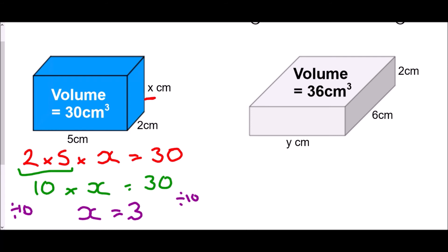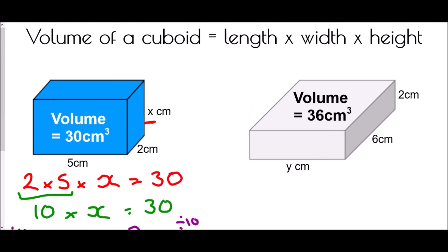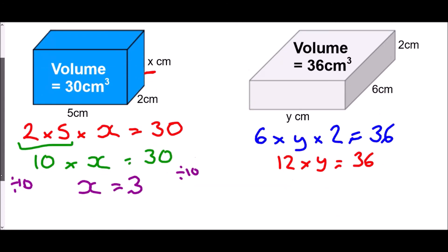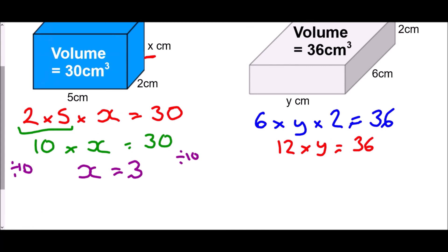For the other cuboid, I'm finding the width. Using the formula: length of six times y times height of two must equal 36. Six times two is twelve, so twelve times y equals 36. Dividing both sides by twelve, y equals 36 divided by 12, which is also 3.